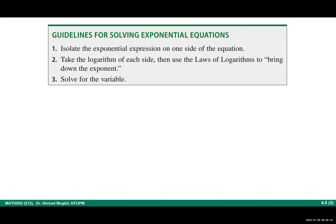For more complicated equations, you need to follow these guidelines. Try to isolate the exponential expression alone on one side. Then you need to bring down the exponents. One of the best ways to do that is to take the logarithm of both sides. It is also better to take the logarithm of the same base, then use the laws of logarithm — especially the power rule — to bring down the exponents. Finally, solve for the variable.